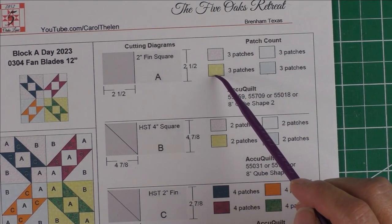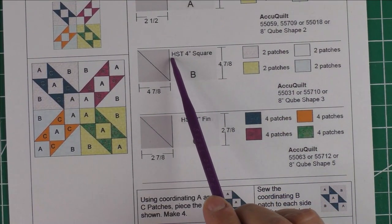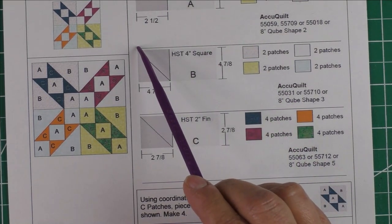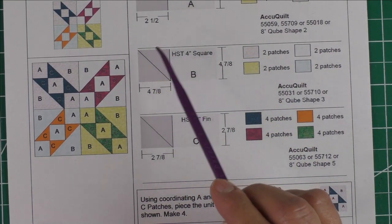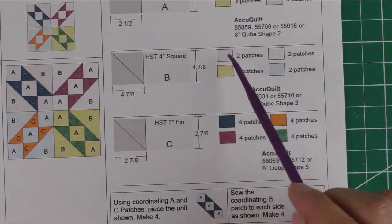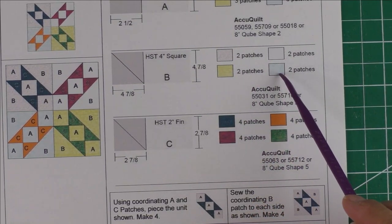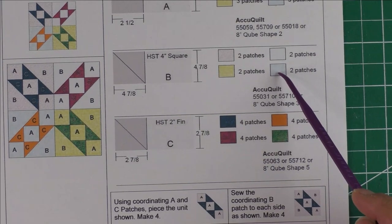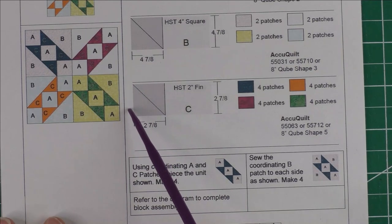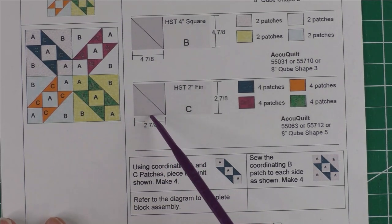The second patch, Patch B, is a half-square triangle, 4-inch finished. We're going to cut 4⅞-inch squares, cut them in half once diagonally, and we'll have two patches. For the light fabrics or the background, you'll need two patches of each of your background colors. Patch C is a 2-inch finished half-square triangle. We'll cut 2⅞-inch squares, cut them in half once diagonally, and you'll need four patches of each of your dark colors.